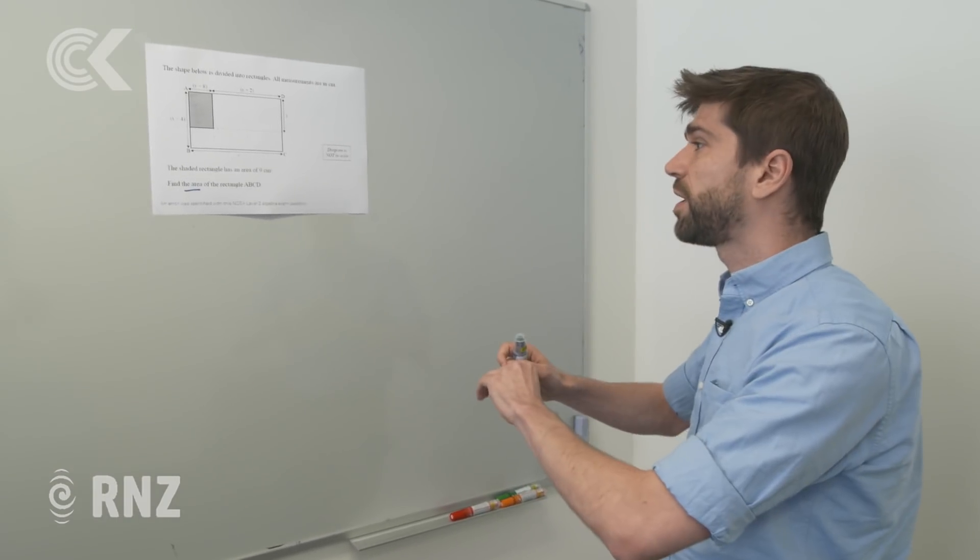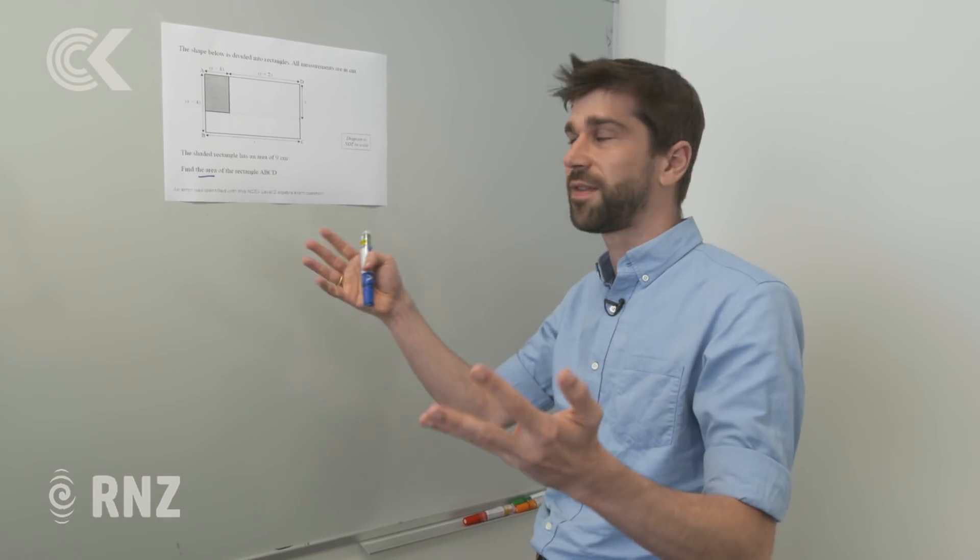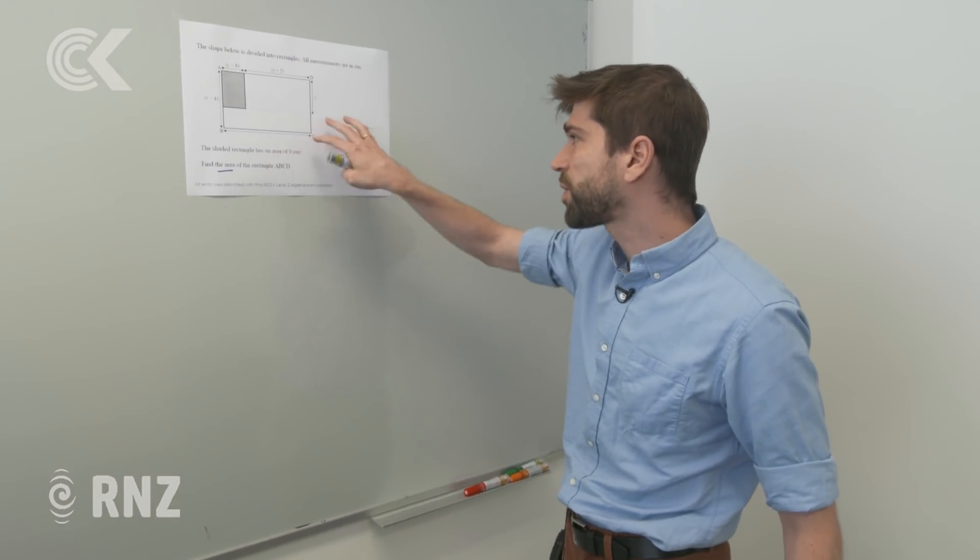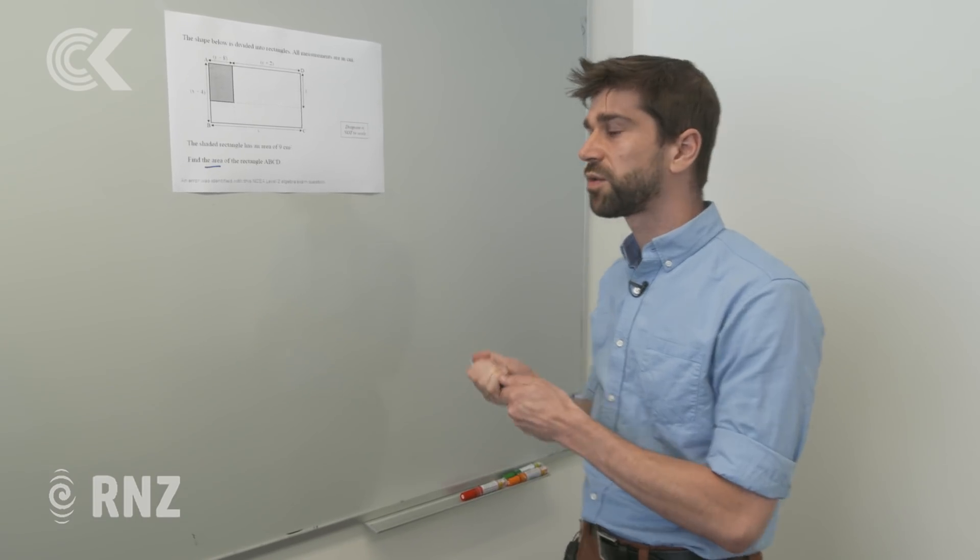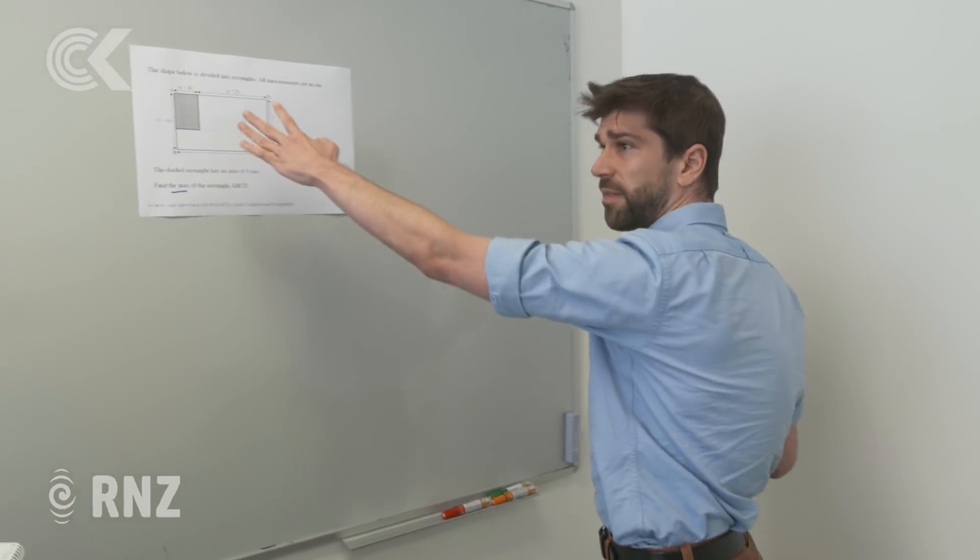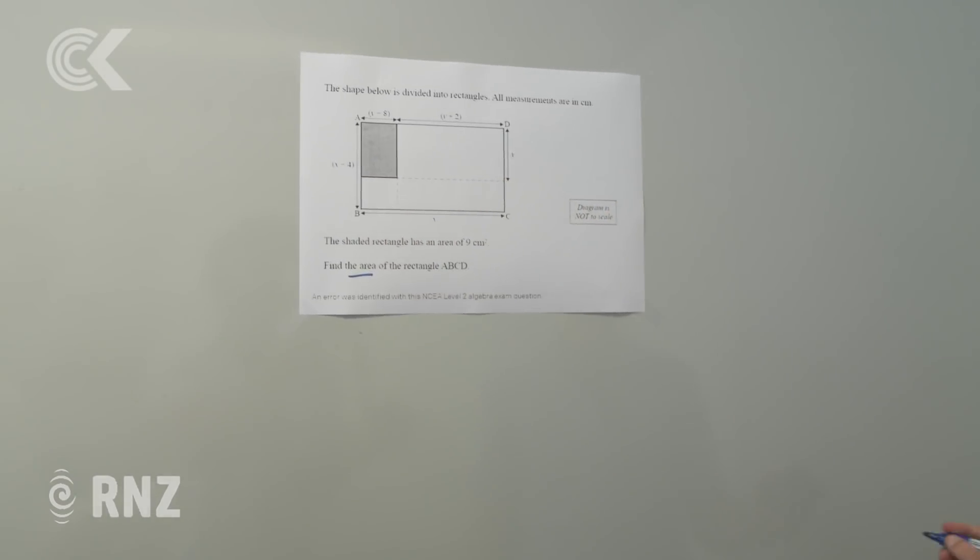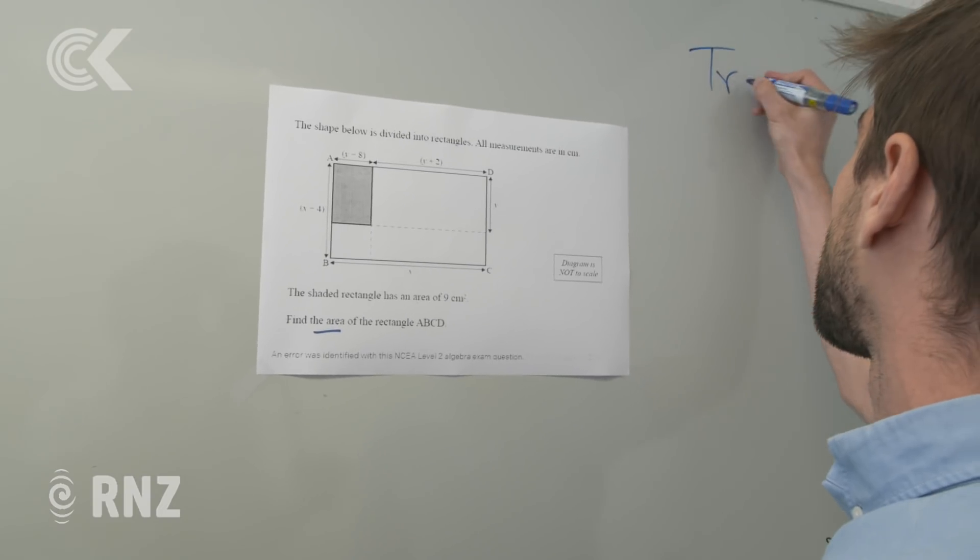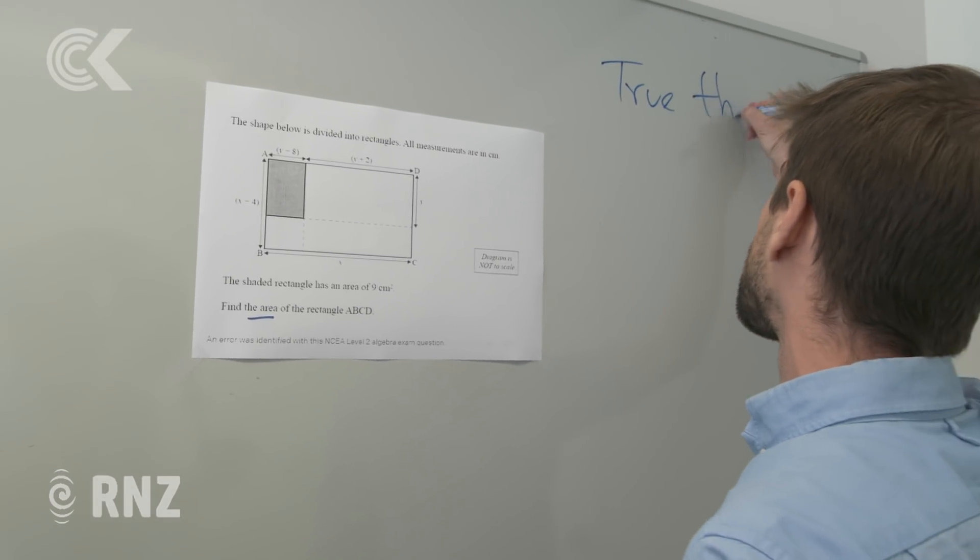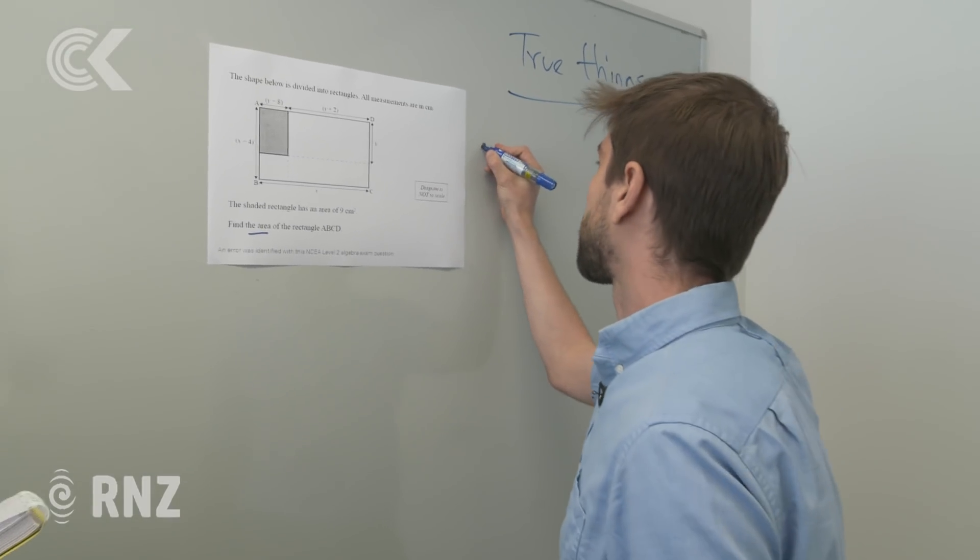A better approach is not to worry about what the answer to the question is yet, you're just going to hope you're going to get there, but instead to start with what you've got and to write down all the true things that are out there. So let's start with that. So what do we know about this, what can we observe that is true? Some of those things might not be relevant in the end, we don't care, we're just going to write down true things.